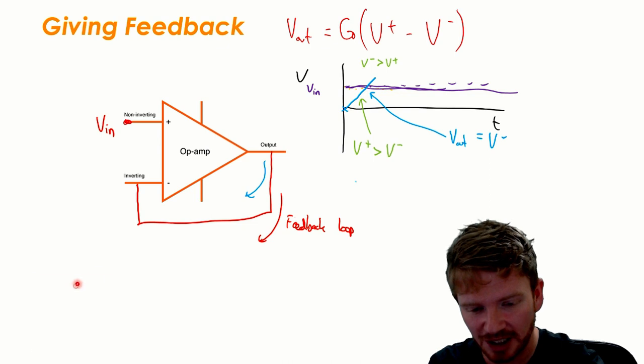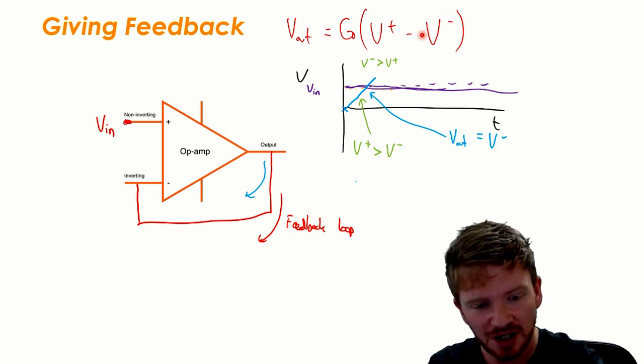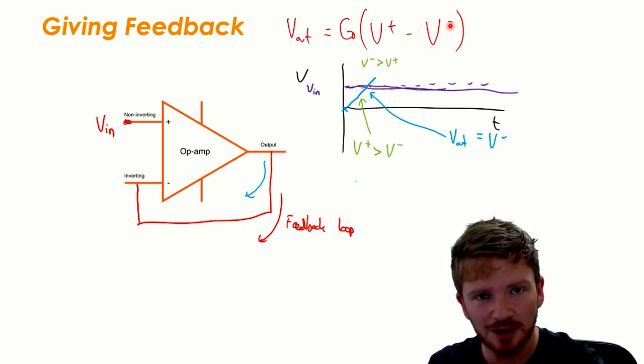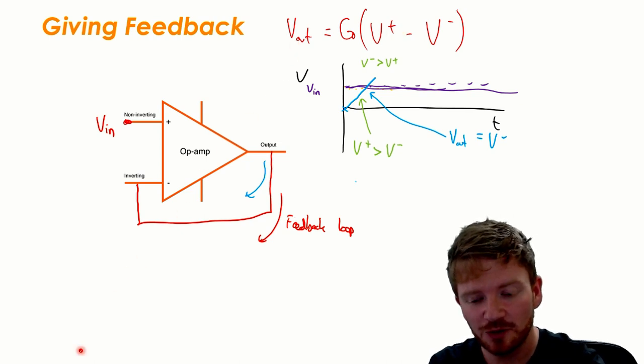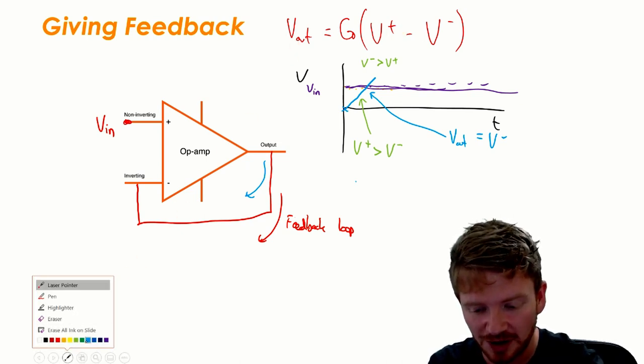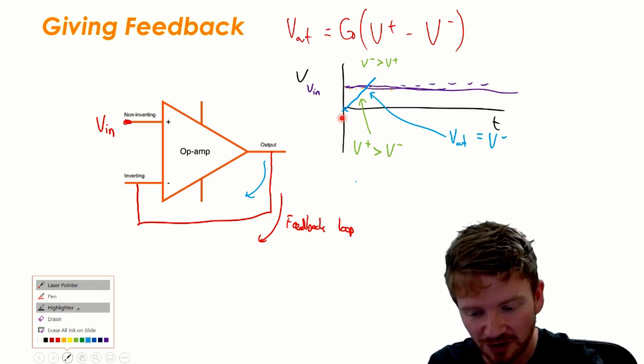So what will happen now? Well if we look back at our gain equation, now the inverting input is larger than the non-inverting input. So if this number is bigger than this number then this whole term is going to become negative. Because this whole term is going to become negative, V out is going to try to become negative, so it's going to start to decrease very rapidly.